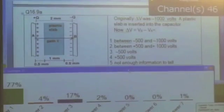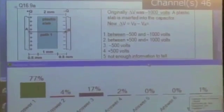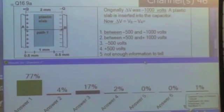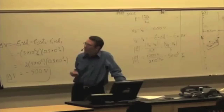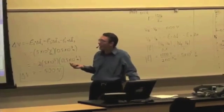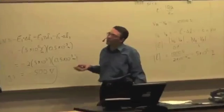Everybody's sort of gut feeling is a good one. We would think that if the metal slab made the potential difference go down to negative 500 volts, we would expect the plastic slab to give us a potential difference somewhere between negative 500 and negative 1,000, right? It's going to reduce it, but not as much.